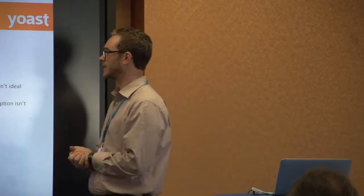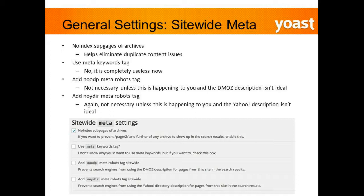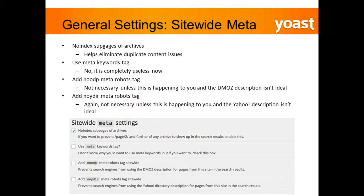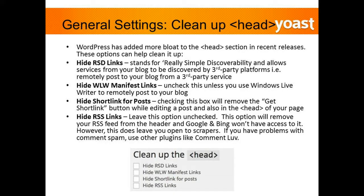The 'add NOODP meta robots tag' option is for DMOZ — a highly curated directory that used to have a lot of influence. If you start noticing your meta descriptions are being pulled from DMOZ, go ahead and check that box. The same thing applies to the no-YDIR meta robots tag — it's not necessary unless your meta descriptions are being pulled from Yahoo's description. In most cases, you're not going to run into those issues.